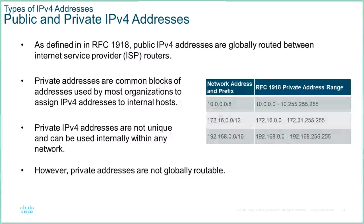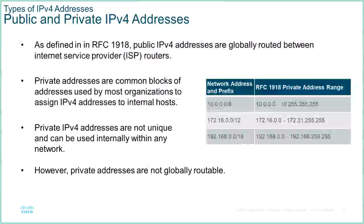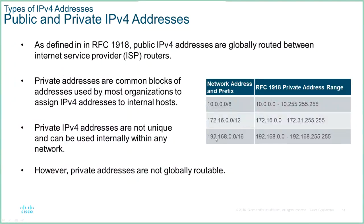Private addresses are a block of addresses that can be used by anyone on their private networks — in other words, they do not get sent to the internet. These are 10.0.0.0/8, 172.16.0.0/12, and 192.168.0.0/16. The original IPv4 was classful, and we had class A, class B, and class C addresses with first subnet masks of /8, /16, and /24.